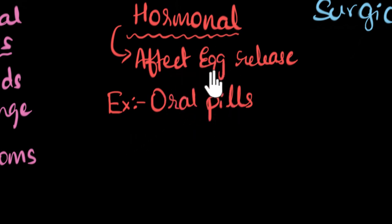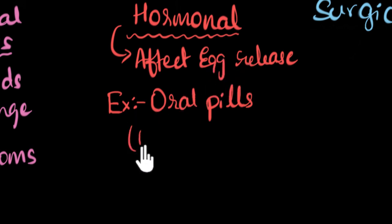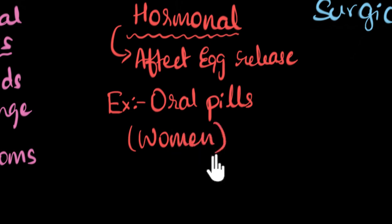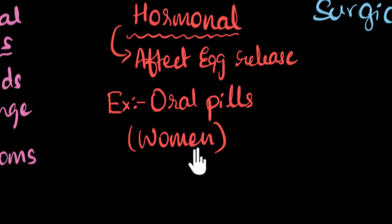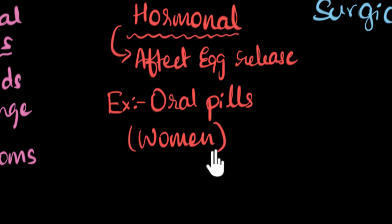Since hormonal methods affect egg release, they are done for women. Why not for men? Because in women we just have one egg to concentrate on, and that's a little easier. In men, we have millions of sperms, and so it's very difficult to make all the sperms inactive. So hormonal methods are usually for women.